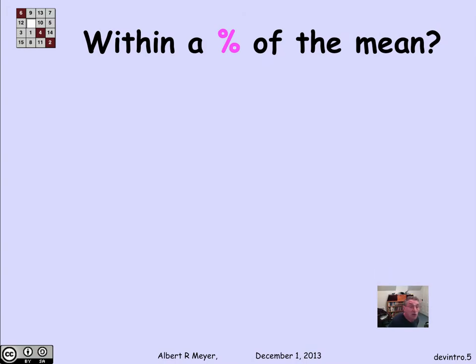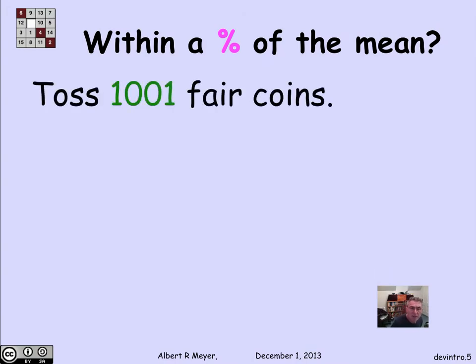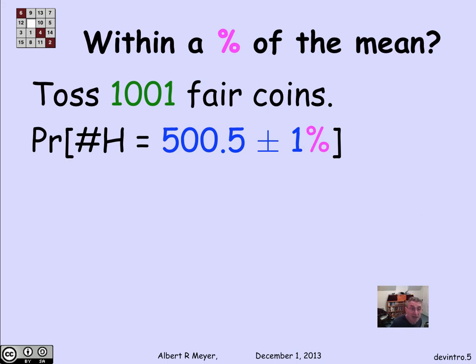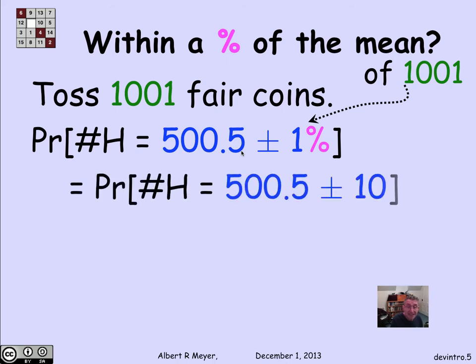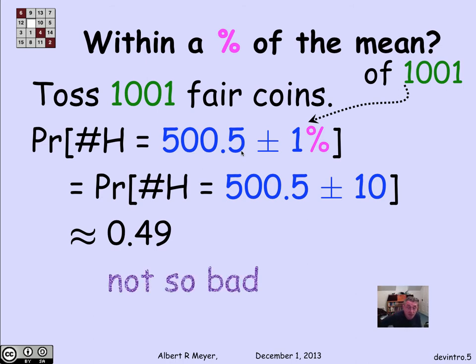But things get better when we start looking at percentages. So what's the probability of being within 1% of the mean if I toss 1,001 coins? Well, 1% of 1,001 is about 10. So we're talking about 1% of 1,001. And the probability of being within 10 of 505, that is to say the probability of being within 510 and 490, is about 0.49. It's almost 50-50, which is not really so bad. So we have a 50-50 chance of actually being within 1% of the expected number when I flip 1,001 coins.